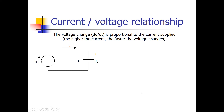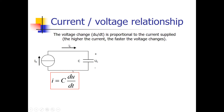Now let's look at the current and voltage relationship. The voltage change — dU/dt, the derivative of the voltage — is proportional to the current supplied. So the higher the current, the faster the voltage changes. Suppose we have a circuit with a current source supplying a capacitor with electrical charge. The important relationship is: the current through a capacitor equals the capacitance value C times dU/dt, which is C times the derivative of the voltage.